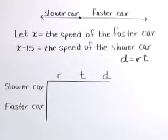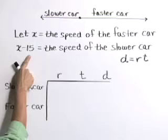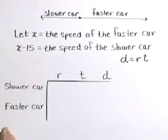Well, we've performed step one. We've read the problem carefully. Let's define our variables as step two. Let x equal the speed of the faster car. Therefore, x minus 15 represents the speed of the slower car.